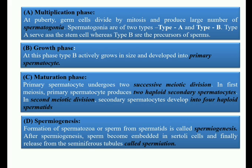After the maturation phase, spermiogenesis occurs — the development of sperm from spermatids. The spermatids become embedded in Sertoli cells, which provide nutrients. Finally, the sperms are released from the seminiferous tubules — a process called spermiation.